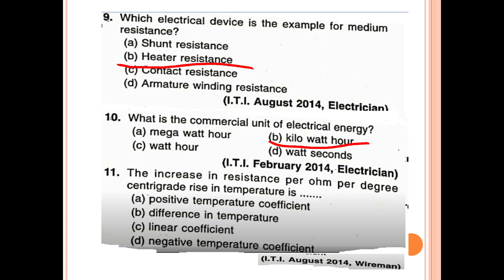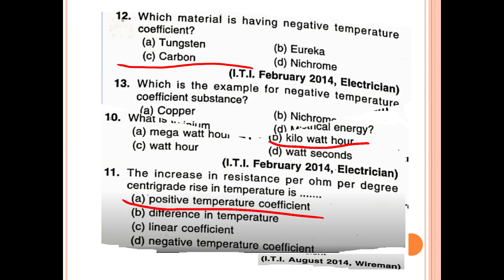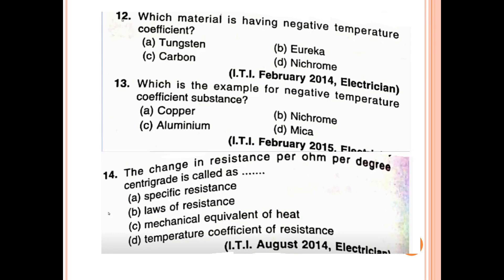The increase in resistance per ohm per degree centigrade rise in temperature is called positive temperature coefficient. Which material has a negative temperature coefficient? The answer is carbon — carbon has a negative temperature coefficient.